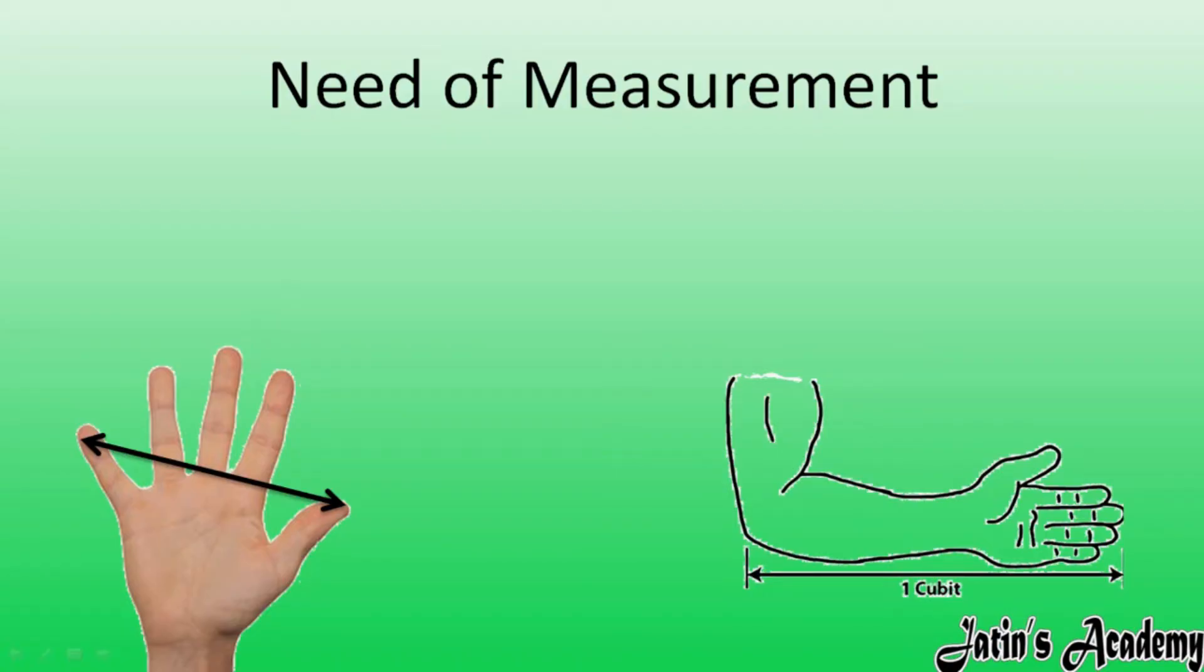So first topic we are having: need of measurement. As in this chapter we are going to study about physical quantities and measurement, so why is there a need to measure anything? What is the need? Why are we measuring anything?